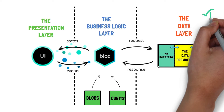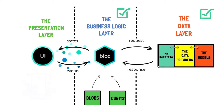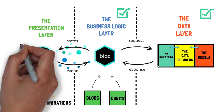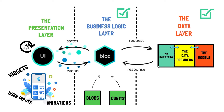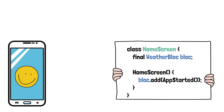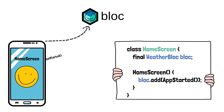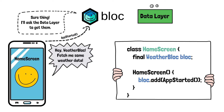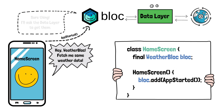We have arrived at our final layer of the block architecture: the presentation layer. This layer sums up everything related to the user interface — the widgets, the user inputs, the lifecycle events, animations, and so on. Its responsibility is to figure out how to render itself based on one or more block states. Most application flows will start with perhaps an app start event, which triggers the application to fetch some data from the data layer. For example, when the first screen of the app is created, inside its constructor, there will be a weather block which adds the app-started event so that some location-based weather will be displayed on the screen.